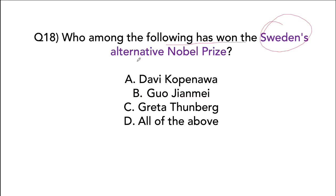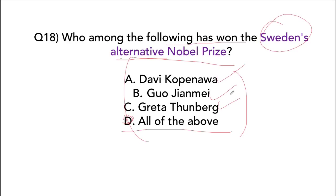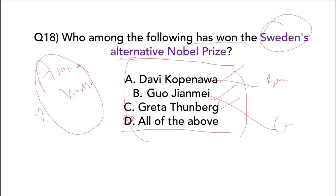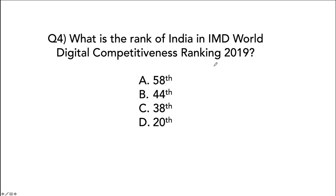Who won Sweden's Alternative Nobel Prize? The answer is all of the following: Davi Kopenawa from Brazil, Guo Jianmei from China, Greta Thunberg from Sweden, and Aminatou Haidar from Western Sahara. Regarding India's ranking in the IMD World Digital Competitiveness Index: India is ranked 44th, up from 48th last year. Number one is America and second is Singapore.